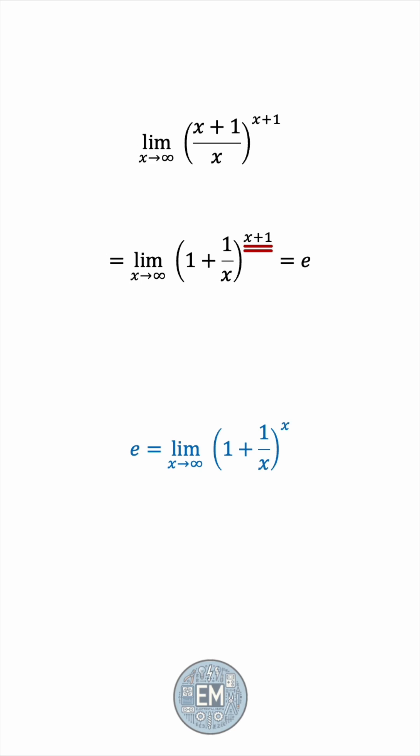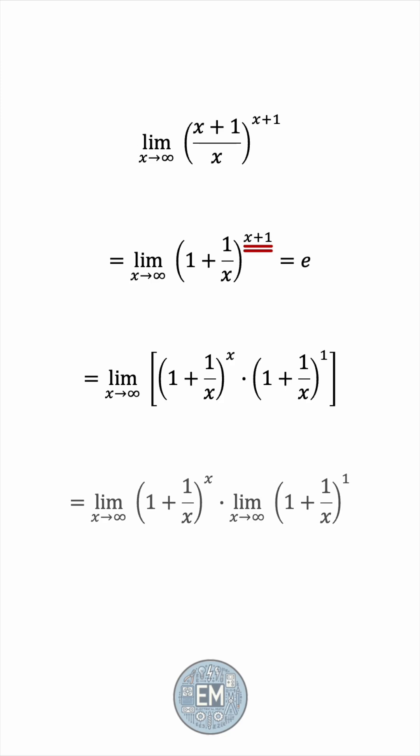But if you want to see a more formal solution, then we would split this into 1 plus 1 over x to the power of x multiplied by 1 plus 1 over x to the power of 1. And then we'll use the multiplicative property of limits to take the limits individually.